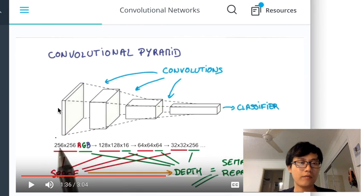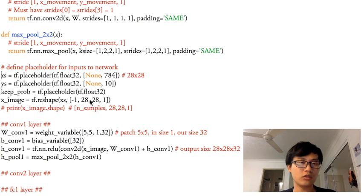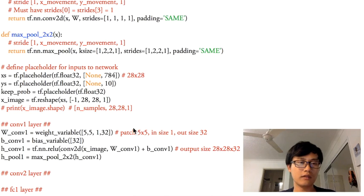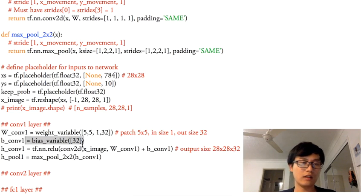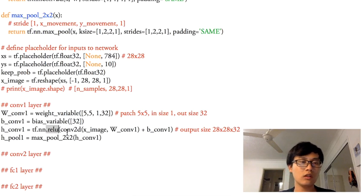Looking at this picture: the height of the image is just 1 (for grayscale). If you have RGB you'll have a height of 3. Through this procedure, filtering takes the image from 1 channel to 32 channels — so the height increases from 1 to 32. The 32 is the number of filters, and the bias is also 32.